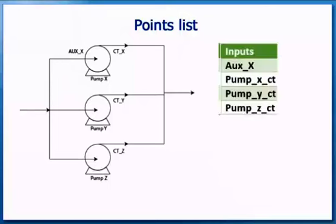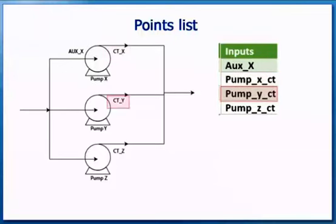There are four digital inputs. We have a digital input called AUXX, which is an auxiliary contact off the PUMPX contactor. There are another three digital inputs, one for each pump to indicate that it is running: PUMPXCT, PUMPYCT, and PUMPZCT.